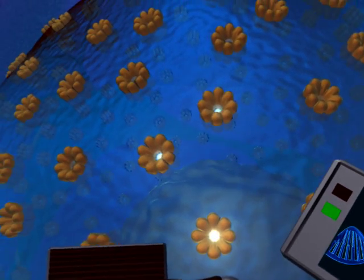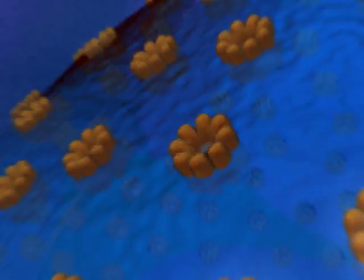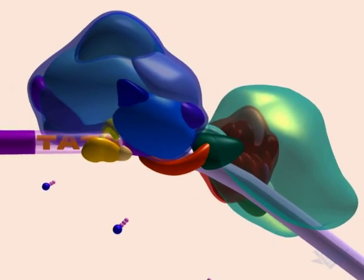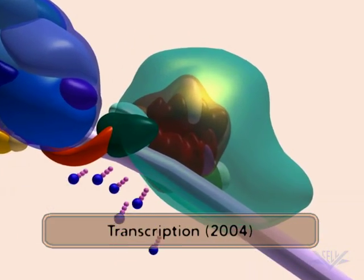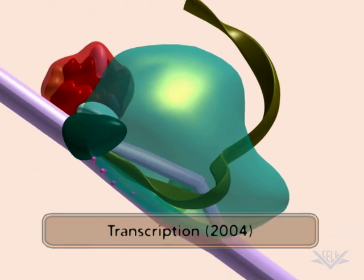That information is mobilized first by the process of transcription. Let's pause and take a short look at the process. During this process, the DNA is used as a template to make RNA. Here, you can see that process in action.